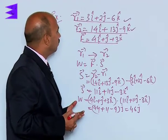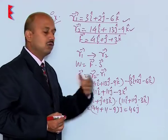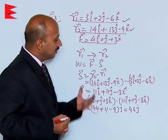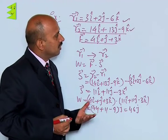So work done by this force for displacing the body from R1 to R2 is equal to 46 joule. This I have used the concept of the dot product of two vectors, as we have discussed in the starting of the chapter.